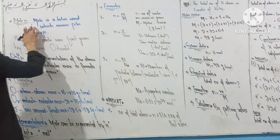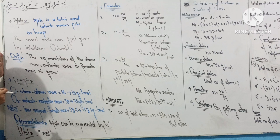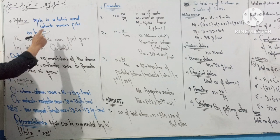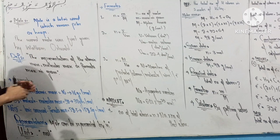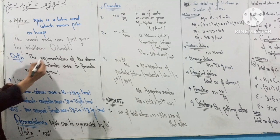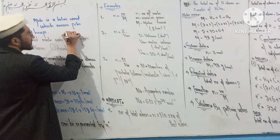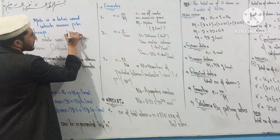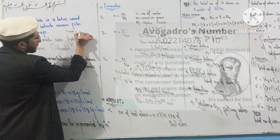Mole is a Latin word which means piles or heaps. It represents heaps and heaps of particles — one mole means that many particles in heaps.